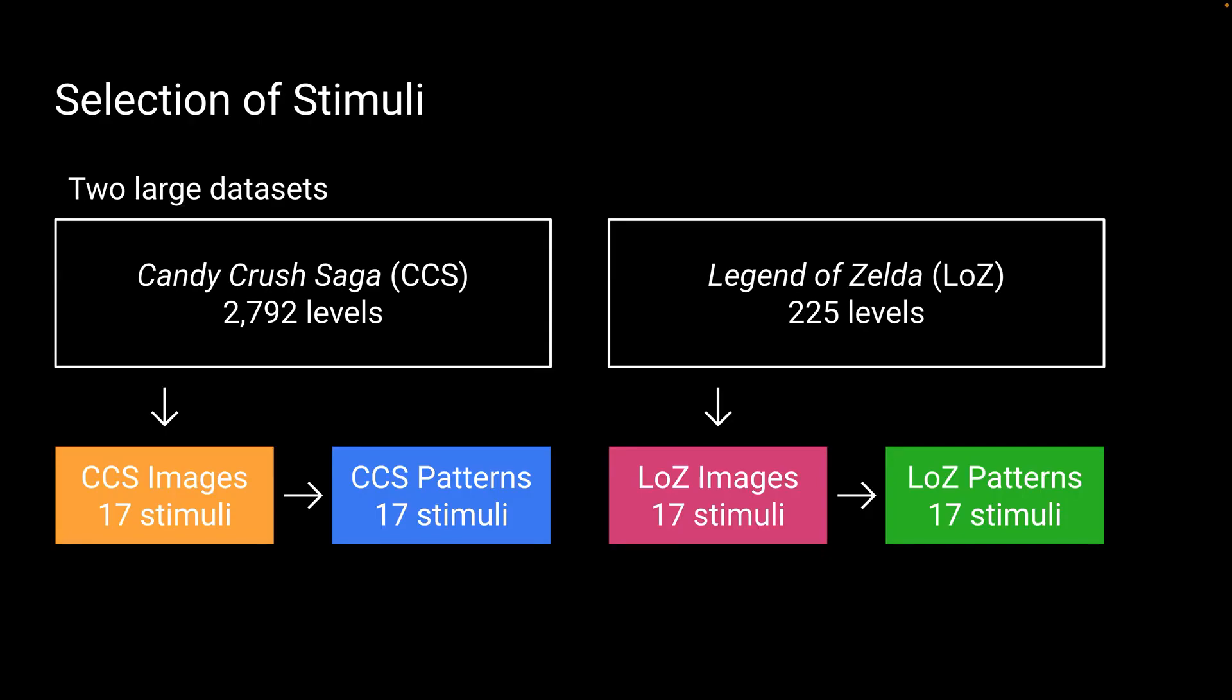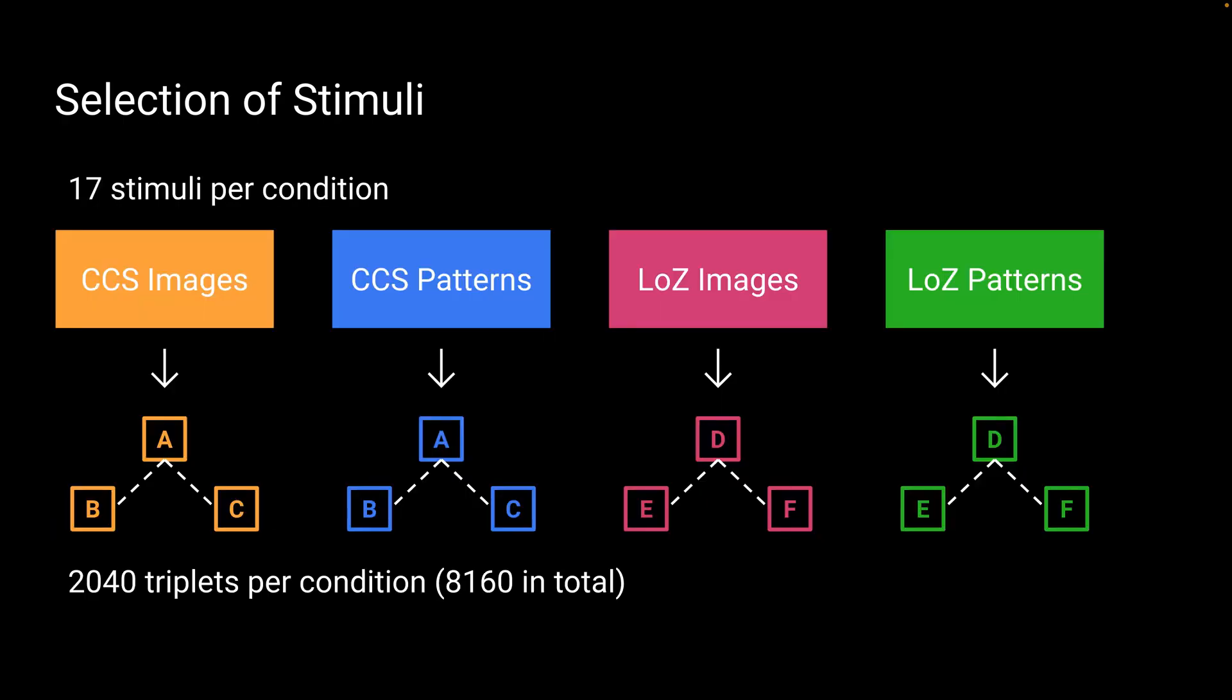We have two large data sets of levels, and from both we select 17 levels as stimuli each. These images are then translated into abstract color patterns. With the 17 stimuli per experimental condition, we get a total of 2,040 triplets per condition and 8,160 overall. That's a lot of questions. We need to scale that down.